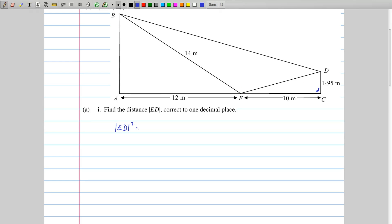So ED squared is given by 10 squared plus 1.95 squared, and so ED is given by the square root of 10 squared plus 1.95 squared, and correct to one decimal place, that is 10.2 meters.